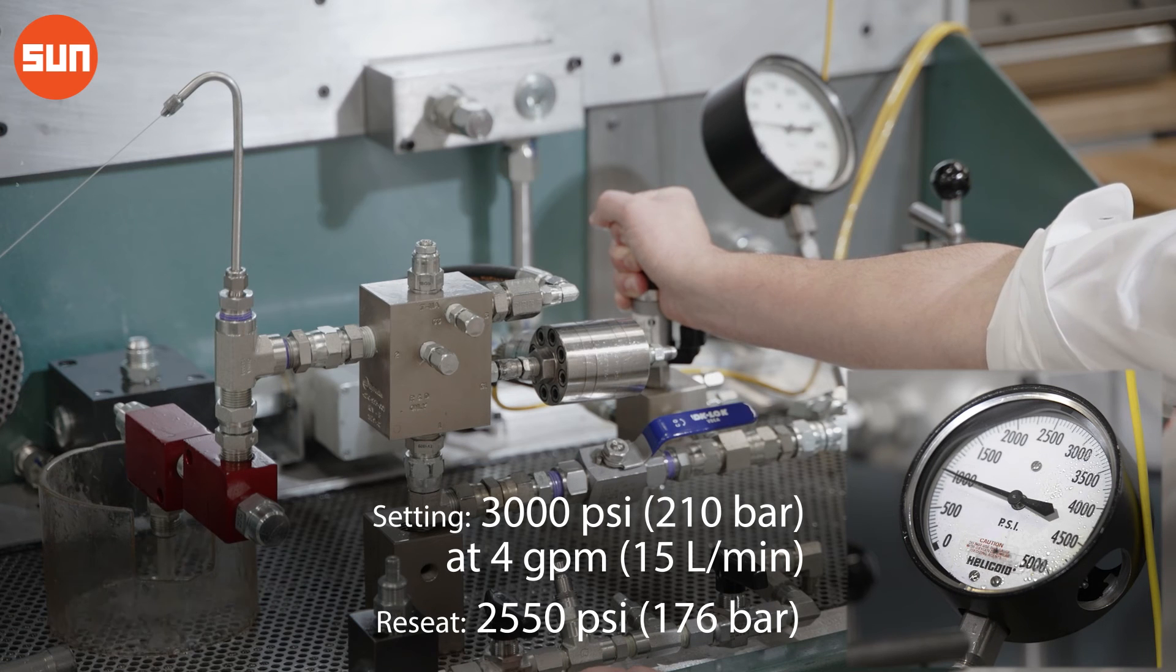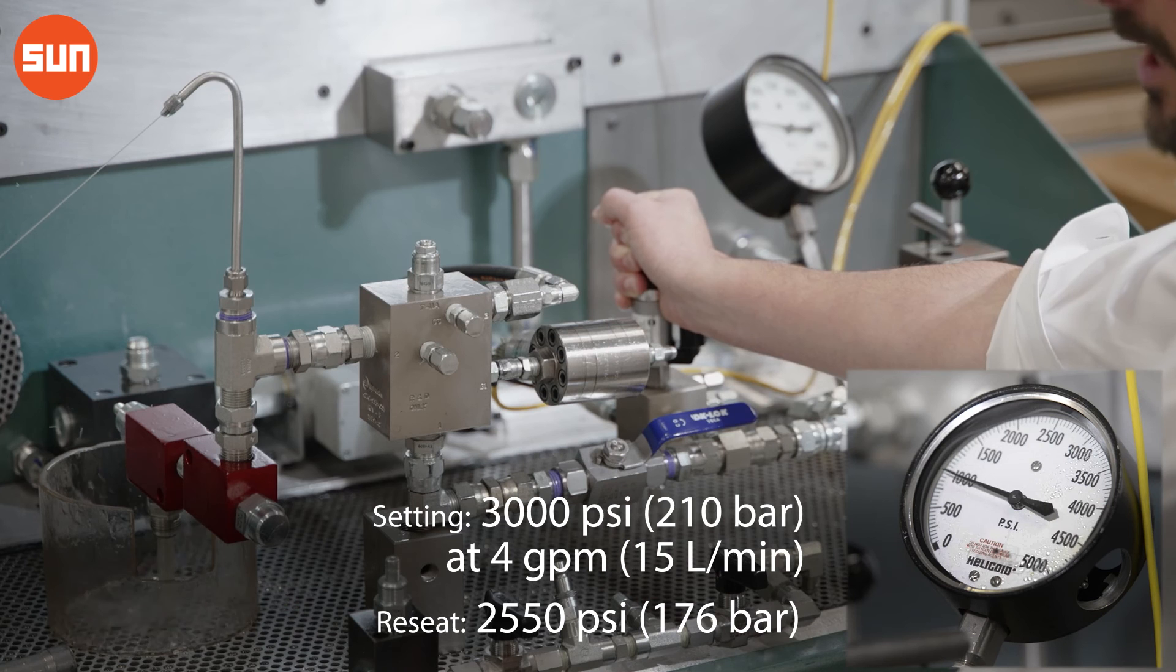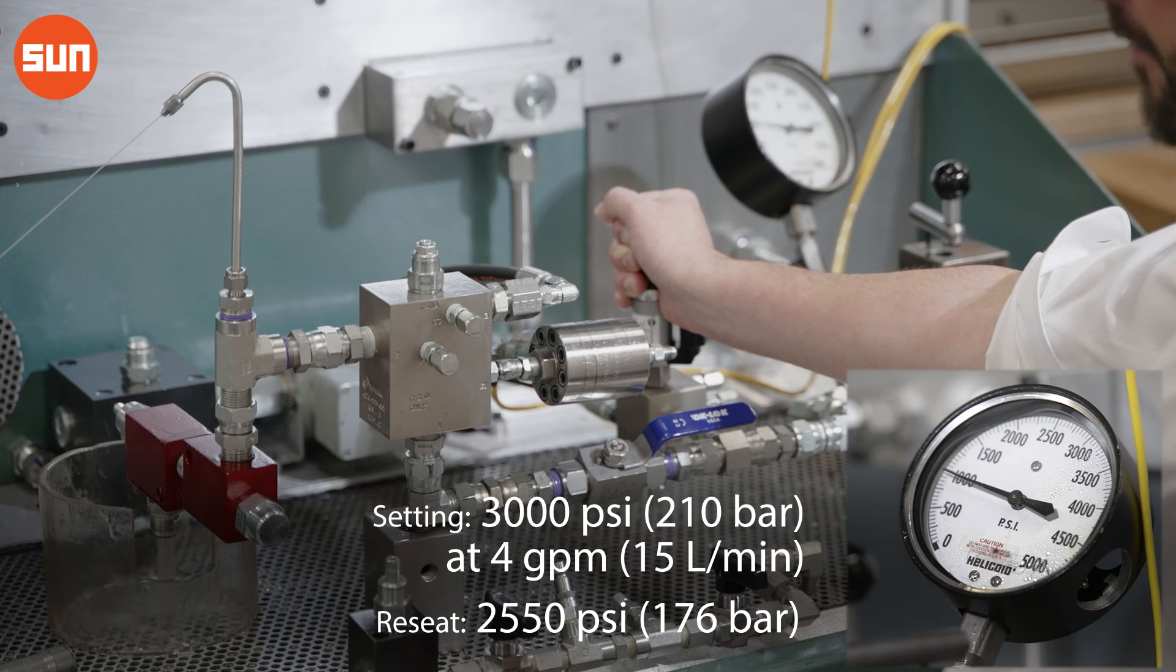We can see our pressure drop dramatically as the valve is open. Once I release this, the valve should close back up and that is when we are looking for zero leakage out of our p-tube.